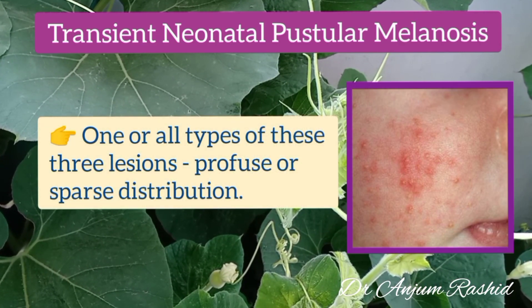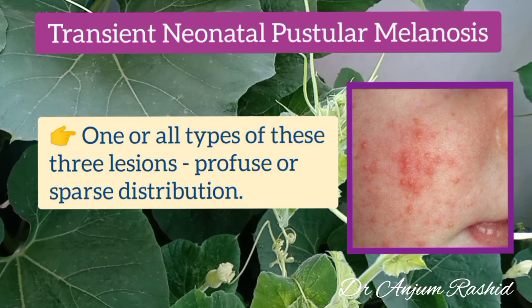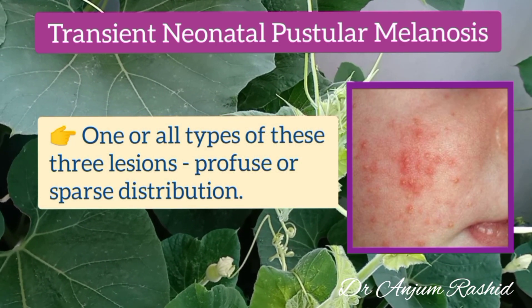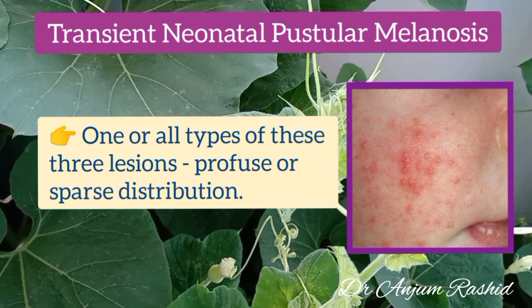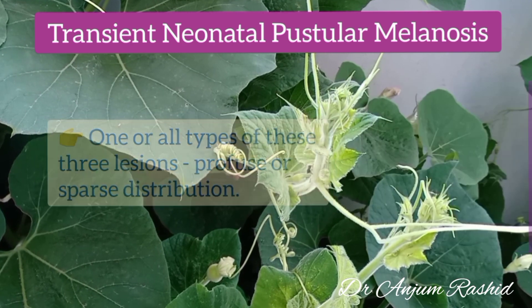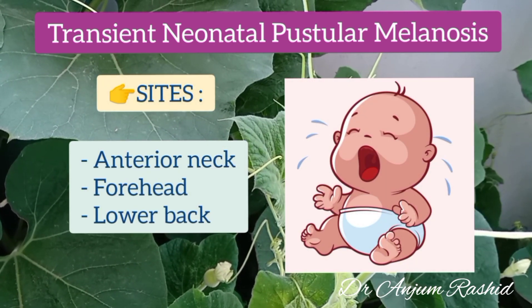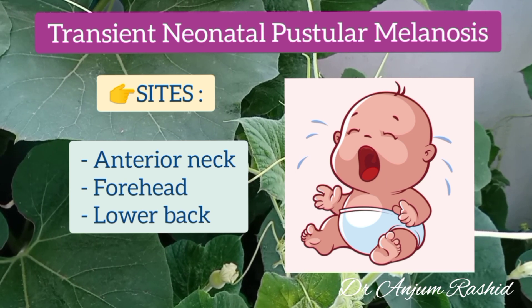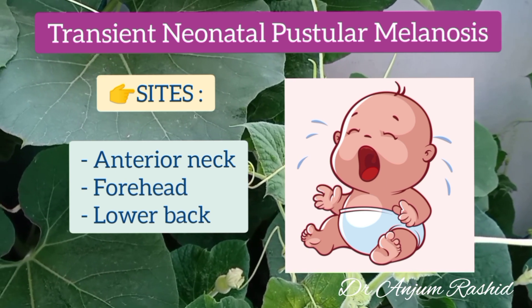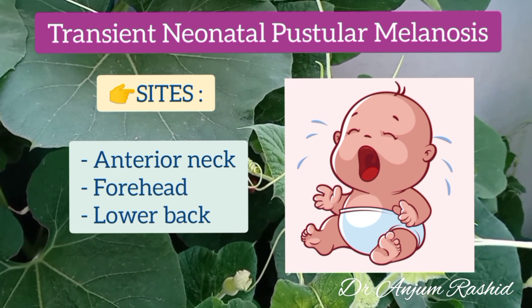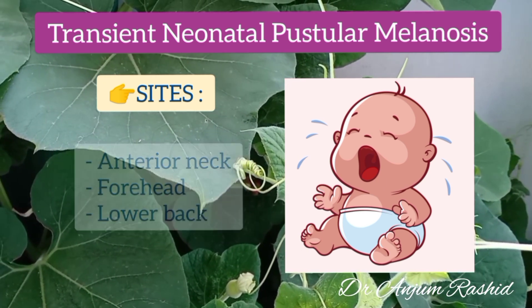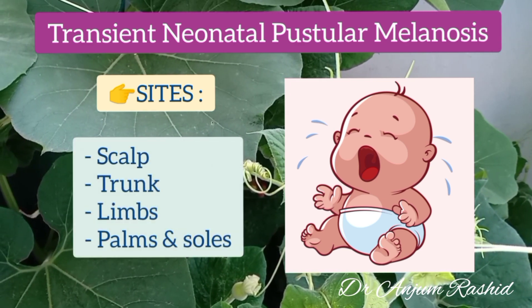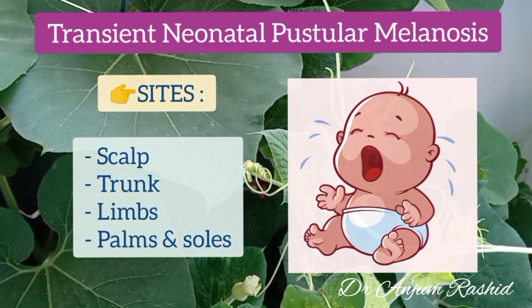Now one or all types of these lesions may be present in a profuse or sparse distribution. Lesions of transient neonatal pustular melanosis are commonly seen on the anterior neck, forehead, and lower back, but they may also be seen on the scalp, trunk, limbs, palms, and soles.